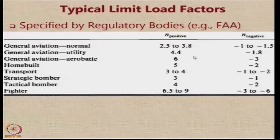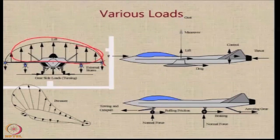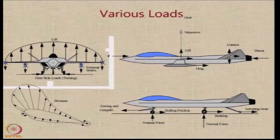The load factors are specified for positive as well as negative conditions. Generally, the load factors on the negative side are typically half the value of the maximum positive load factor. A typical aircraft is subjected to various kinds of loads: distributed loads because of the lift on the wing, concentrated loads because of external stores mounted on the aircraft, loads on the wheel sides because of turning, and the distributed load has a distribution along both the span and chord.